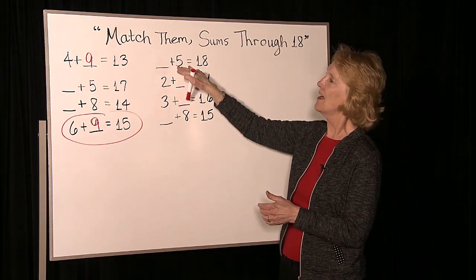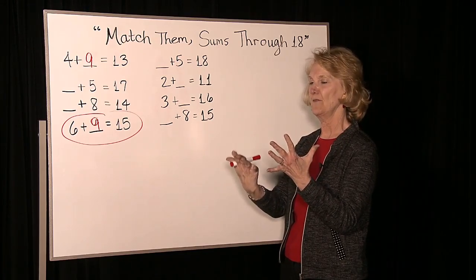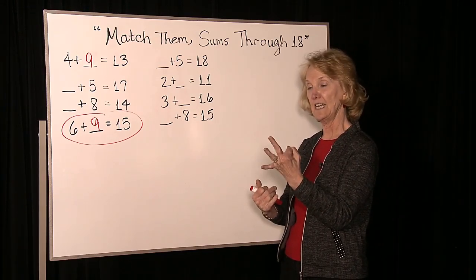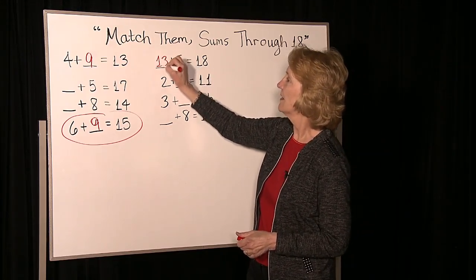So if we have 5, we need 6, 7, 8, 9, 10, 11, 12, 13, 14, 15, 16, 17, 18. We needed a 10 and a 3, so we needed 13.